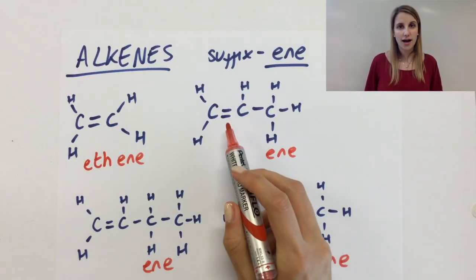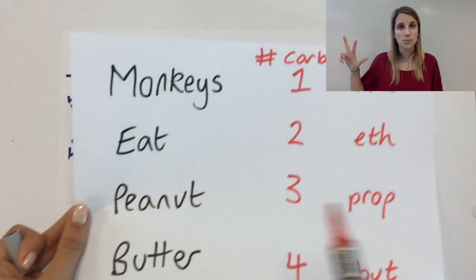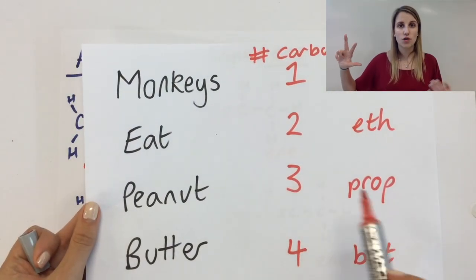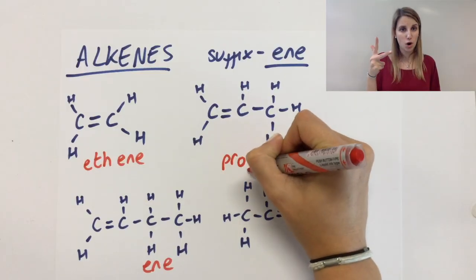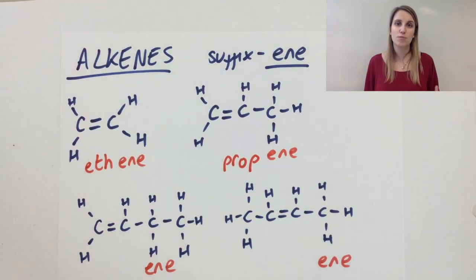The next one has one, two, three carbons. So that means that it's got the prefix prop. Monkeys eat peanut. Prop-ene is the name for this compound.